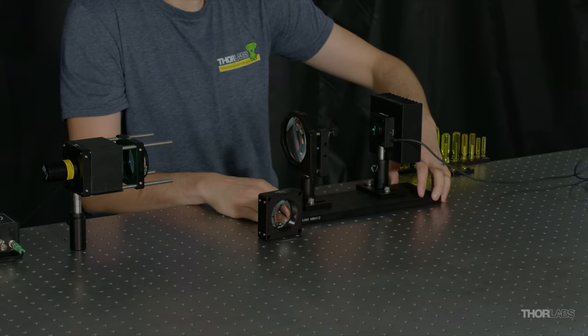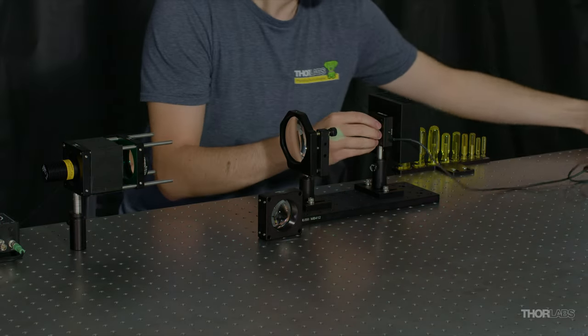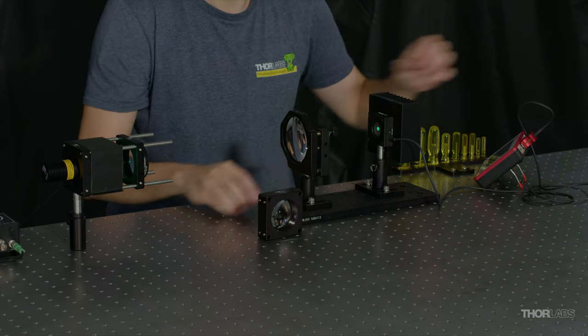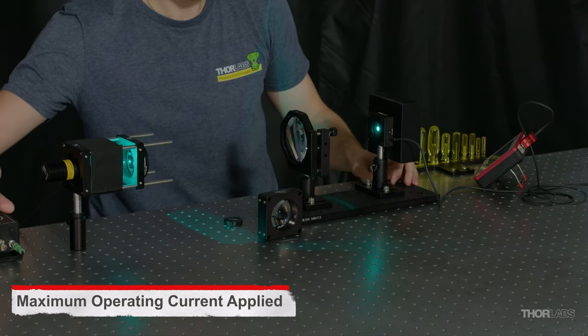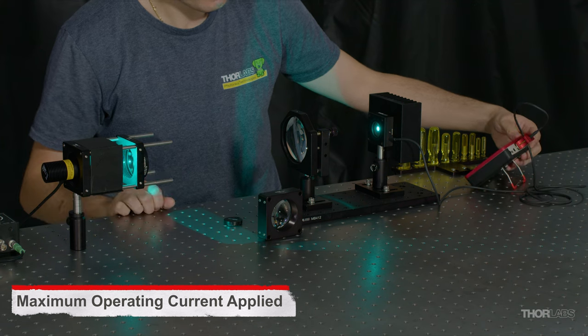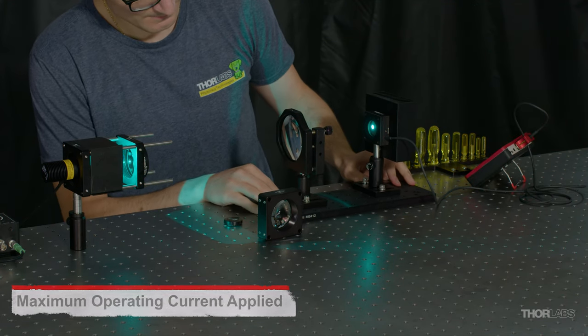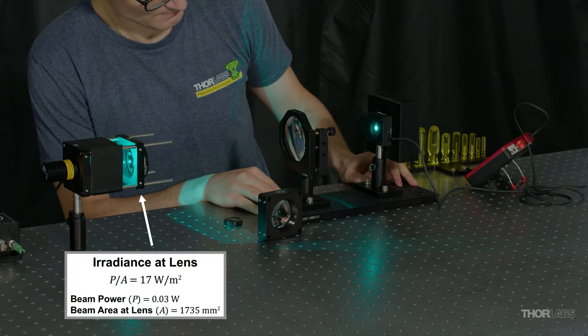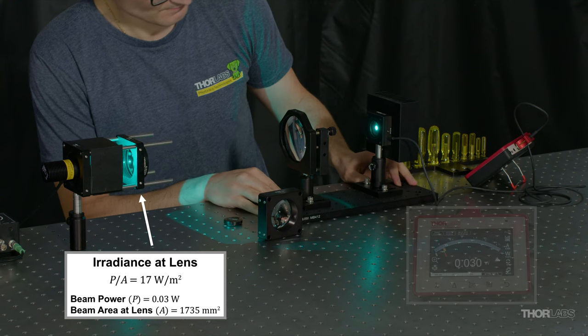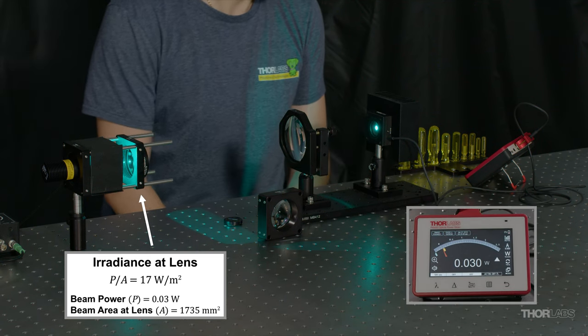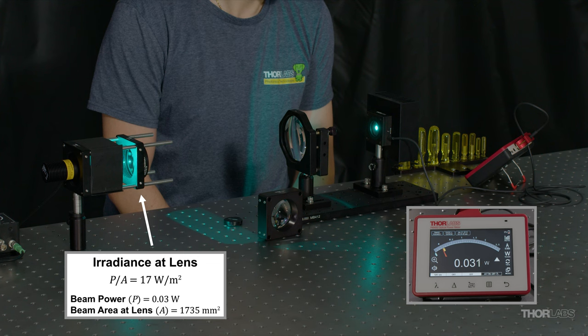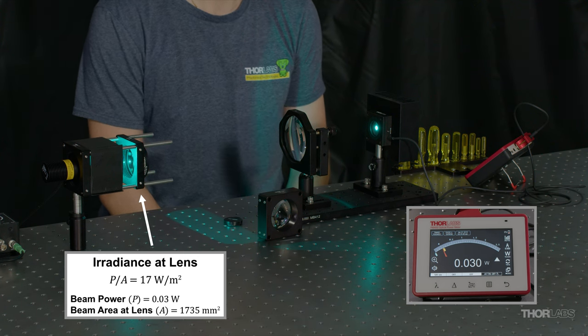I'll measure the optical power again. We have lost a significant amount of power within our collimated beam since less of the light is captured by the lens.